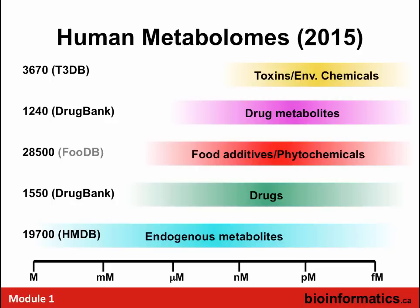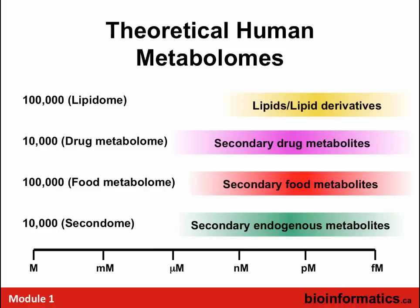There are a number of databases established over the years to capture this information: the Human Metabolome Database, DrugBank, FoodDB, and the Toxic Exposome or T3DB. These are examples of resources that help you identify and understand the roles of these chemicals. They're not intended only for humans — the same metabolites are found in mice, rats, and cows, and many are also found in plants and microbes. In fact, the human metabolome includes hundreds or even thousands of microbial metabolites already.